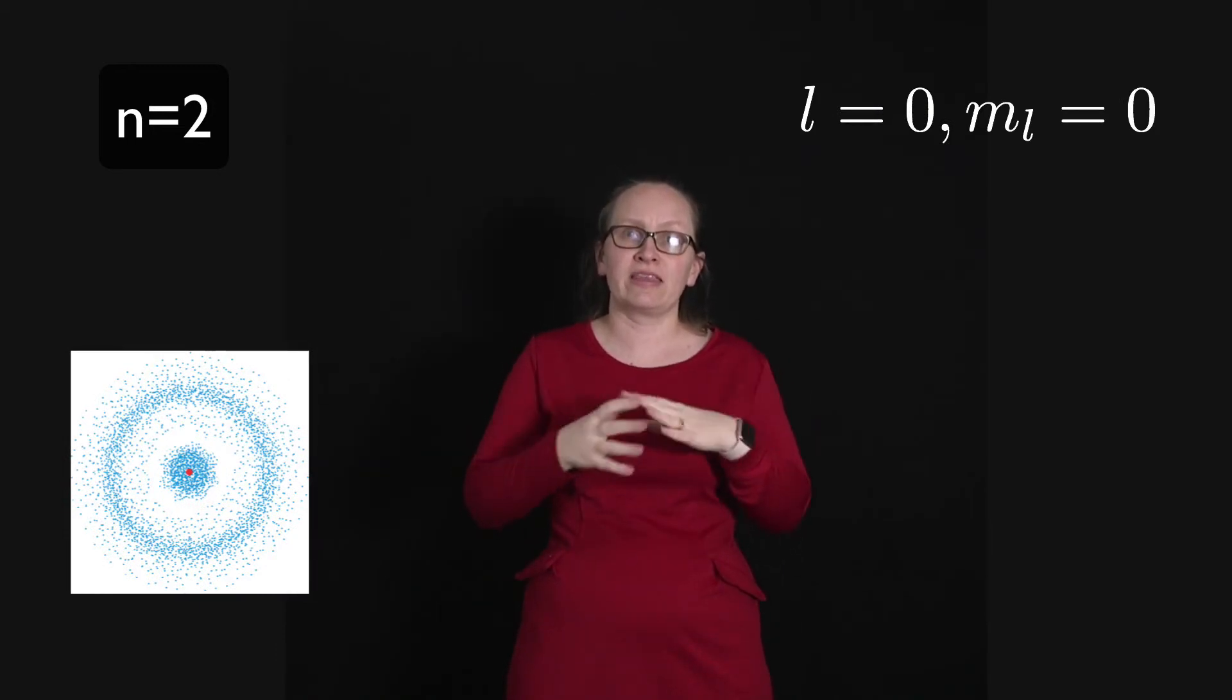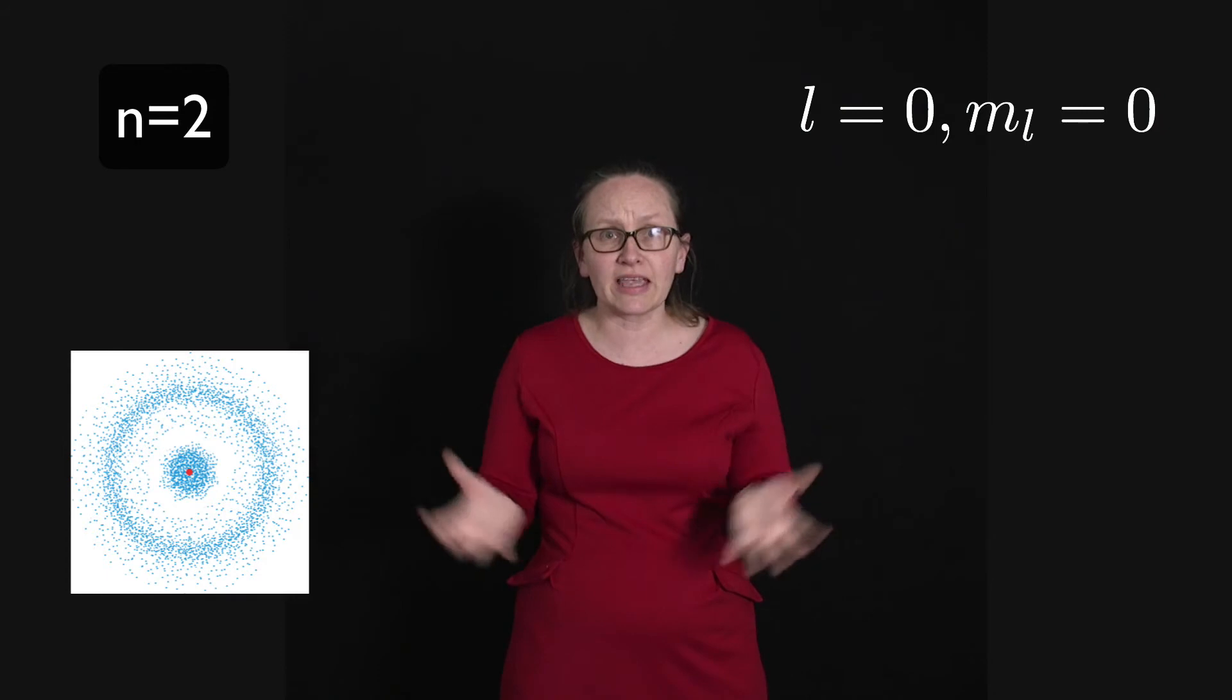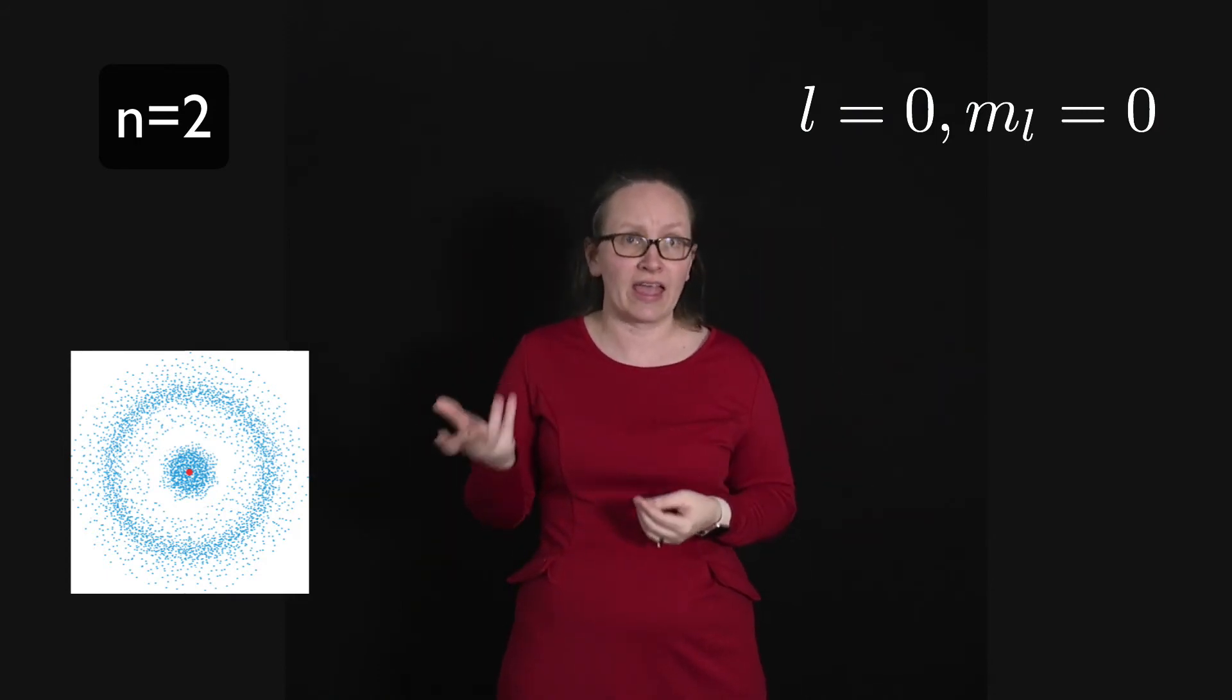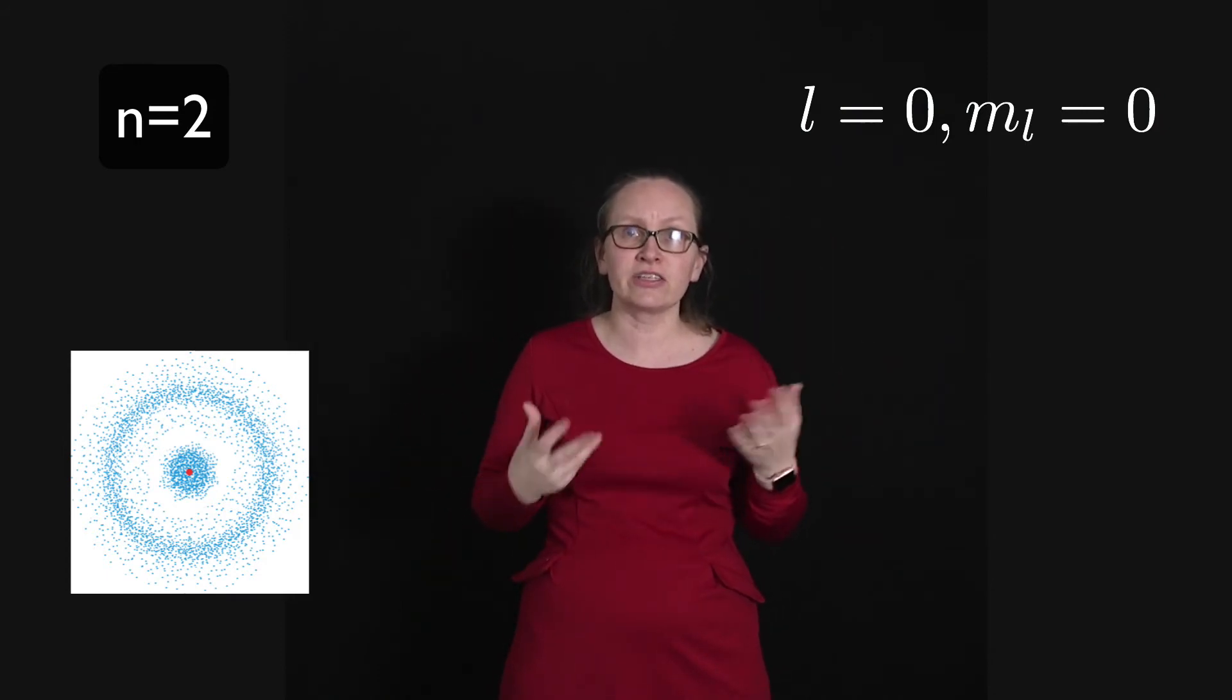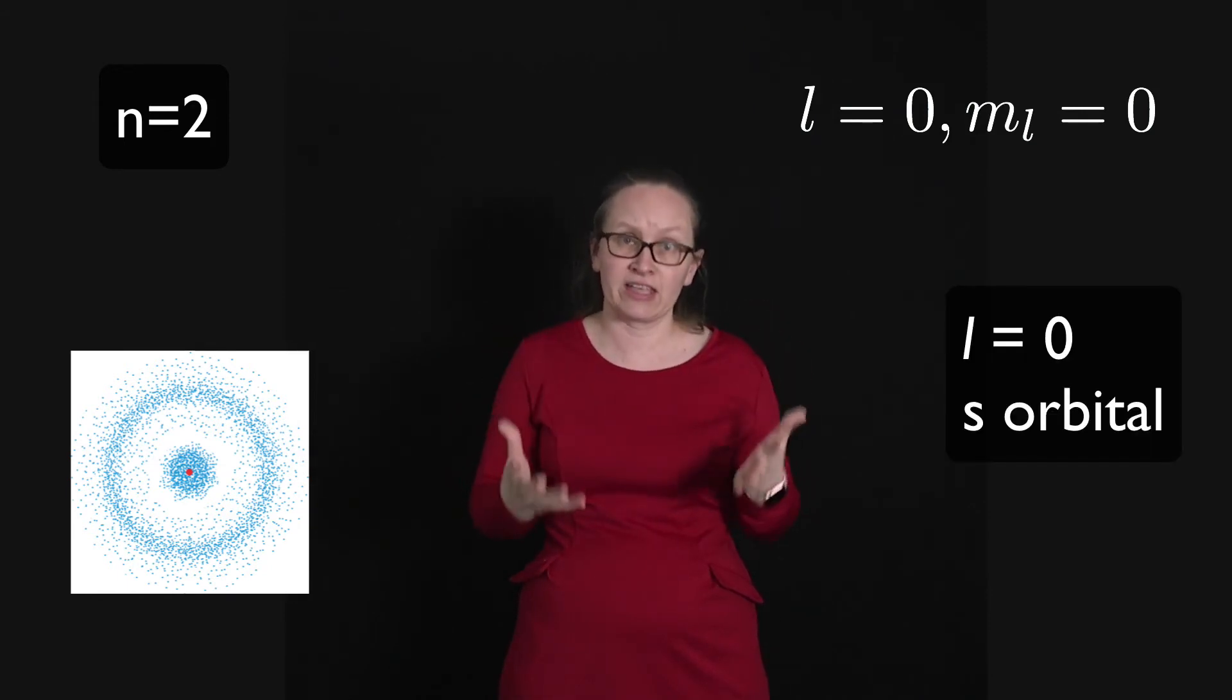We end up with a probability distribution which looks like this. So once again, it's a circle. So this is another s orbital. In fact, it turns out that whenever l equals 0, we have an s orbital.